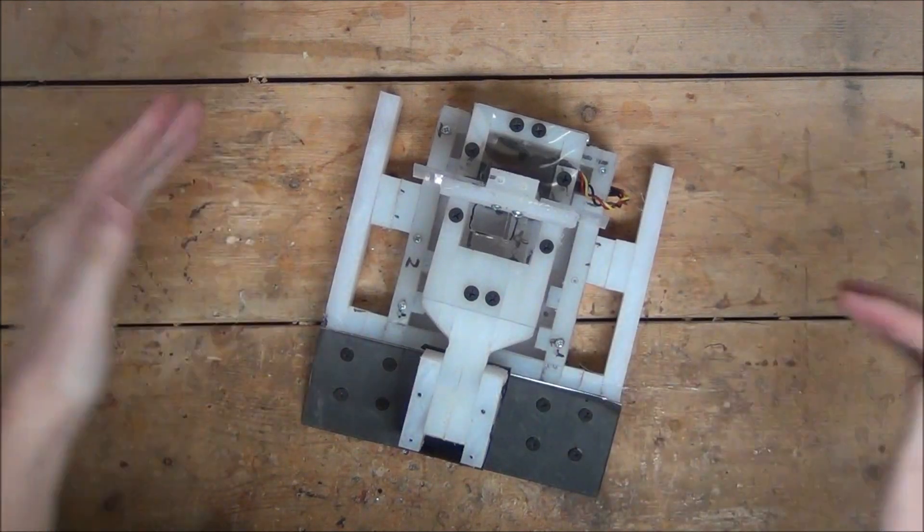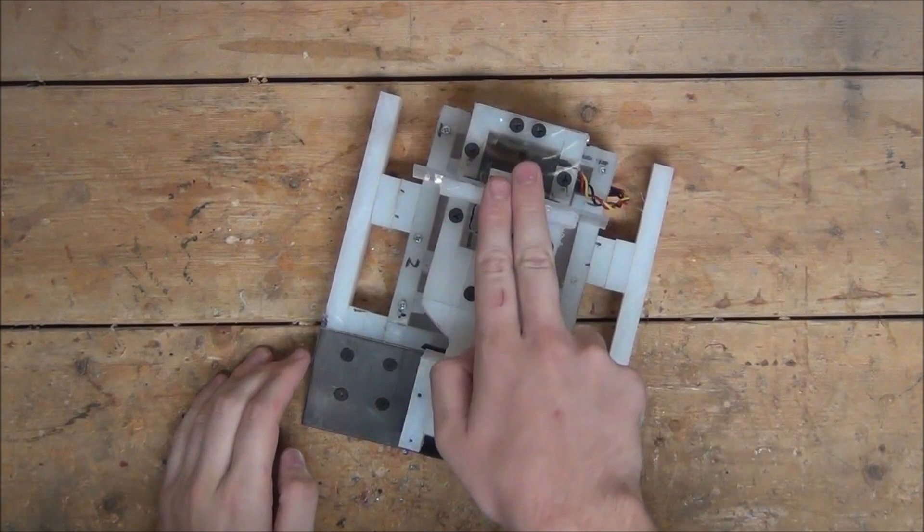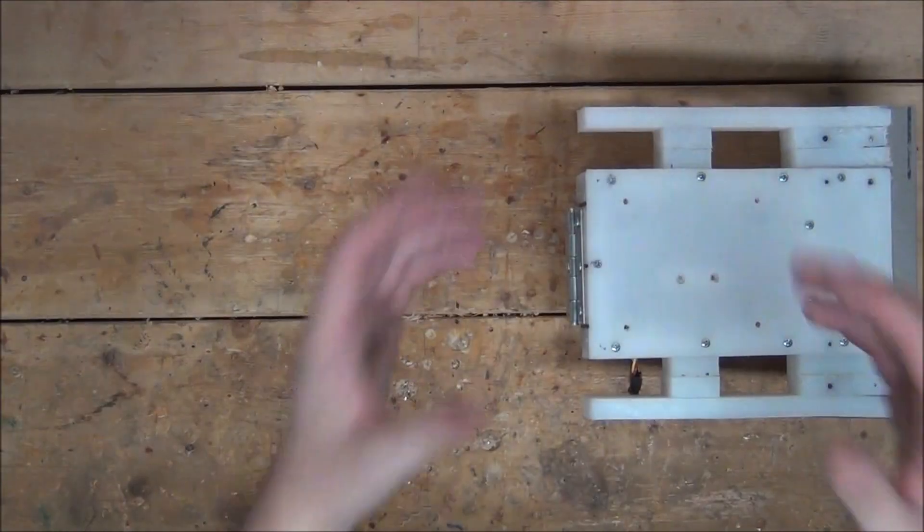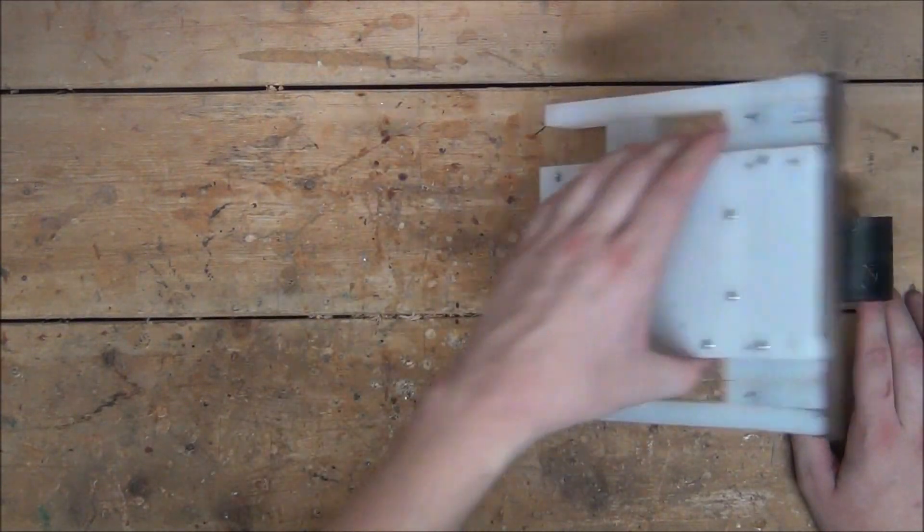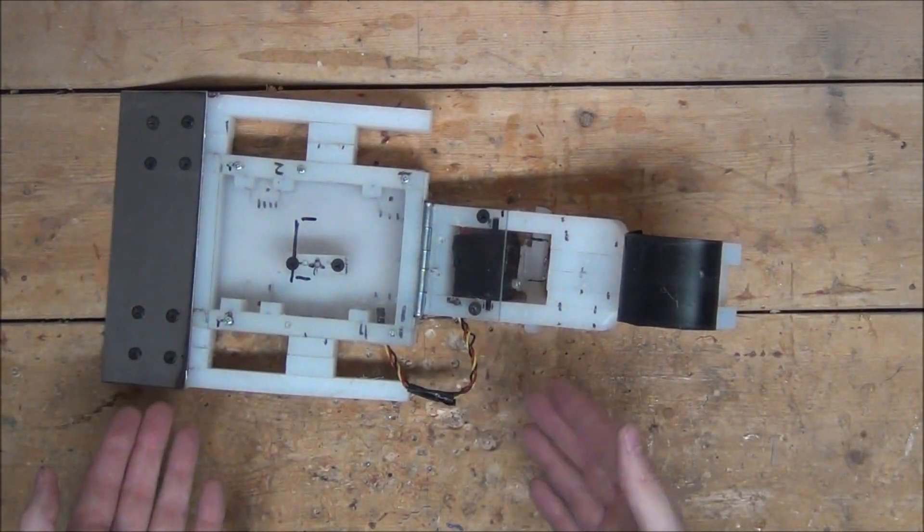So basically, no matter which way you try to flip it over, it'll always land on the T. Then all you have to do is open up the grabbing arm just a little bit to make the weight shift to the back of the robot. Then it'll rock back to its bottom.